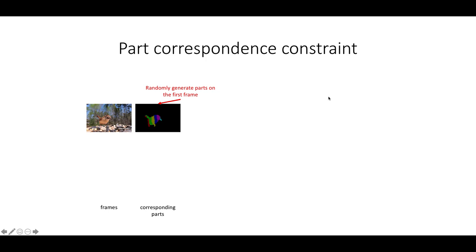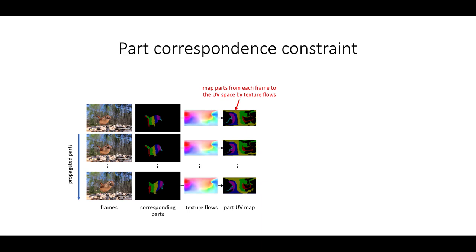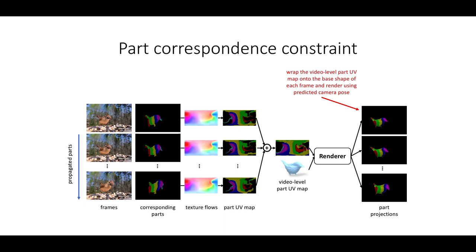We make use of this invariance. In detail, we paint random strips only on the first frame and propagate them to the rest frames using our self-supervised video correspondence learning algorithm. After that, we map the individual parts to the UV space, averaging them to have a more reliable part map and warp it to each predicted shape and render back to the 2D space. By comparing them against the original propagated strip in 2D, the shape and the camera can be regularized over time.